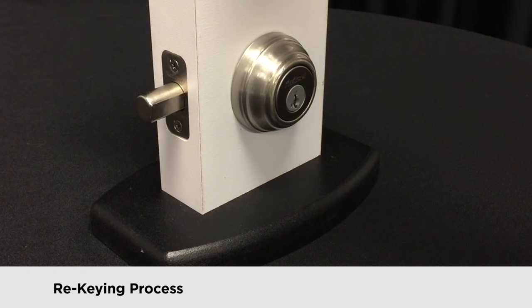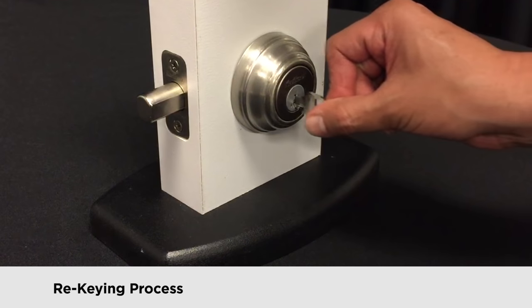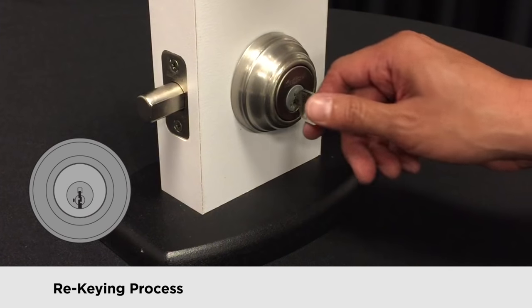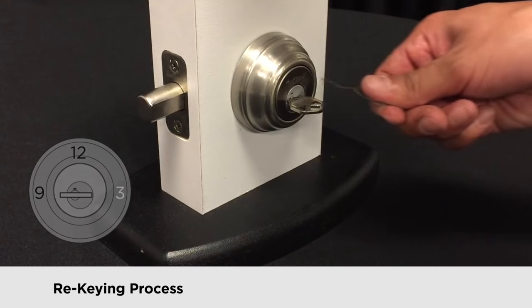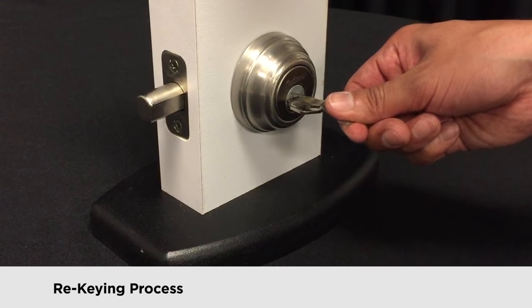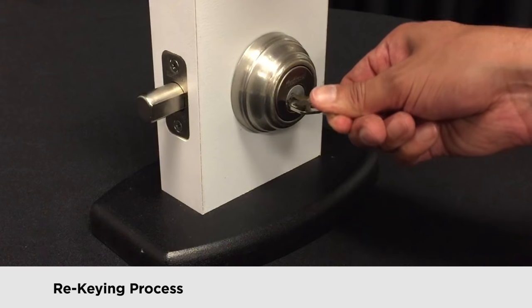First, we're going to show you the rekeying process. Insert the functioning key and turn it to the 3 o'clock position. Insert the smart key learn tool into the slot in the cylinder. You might hear it click.